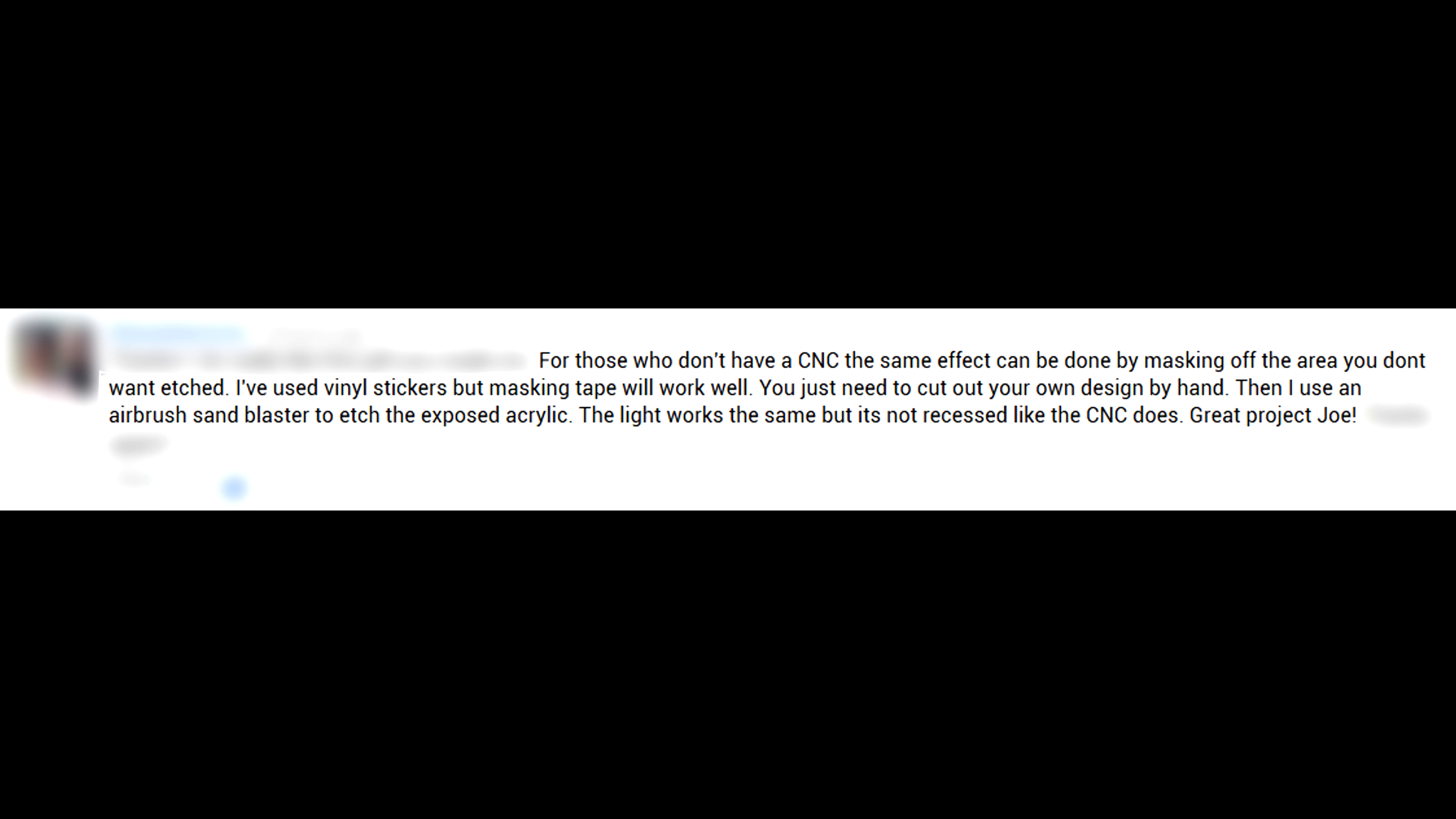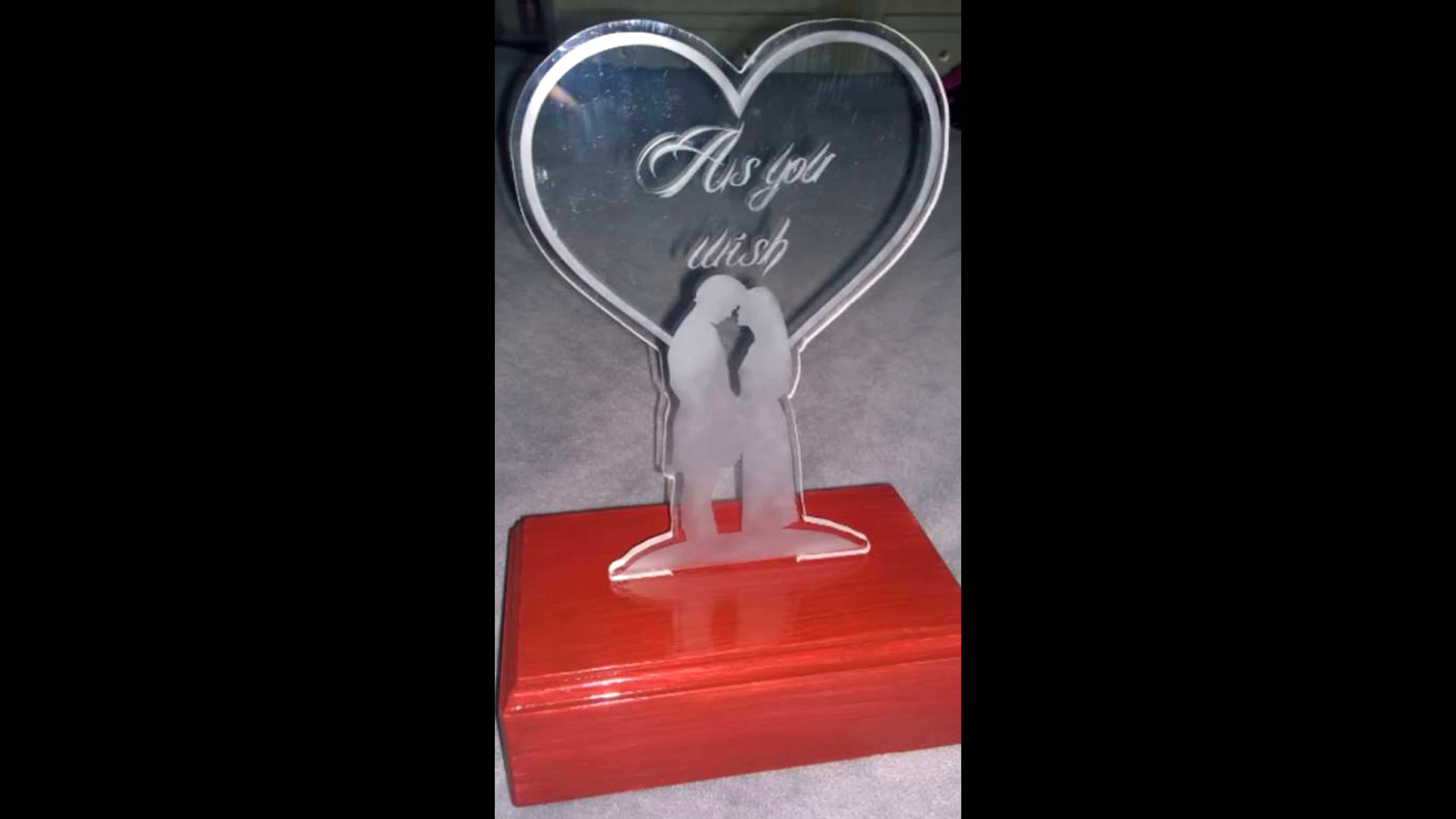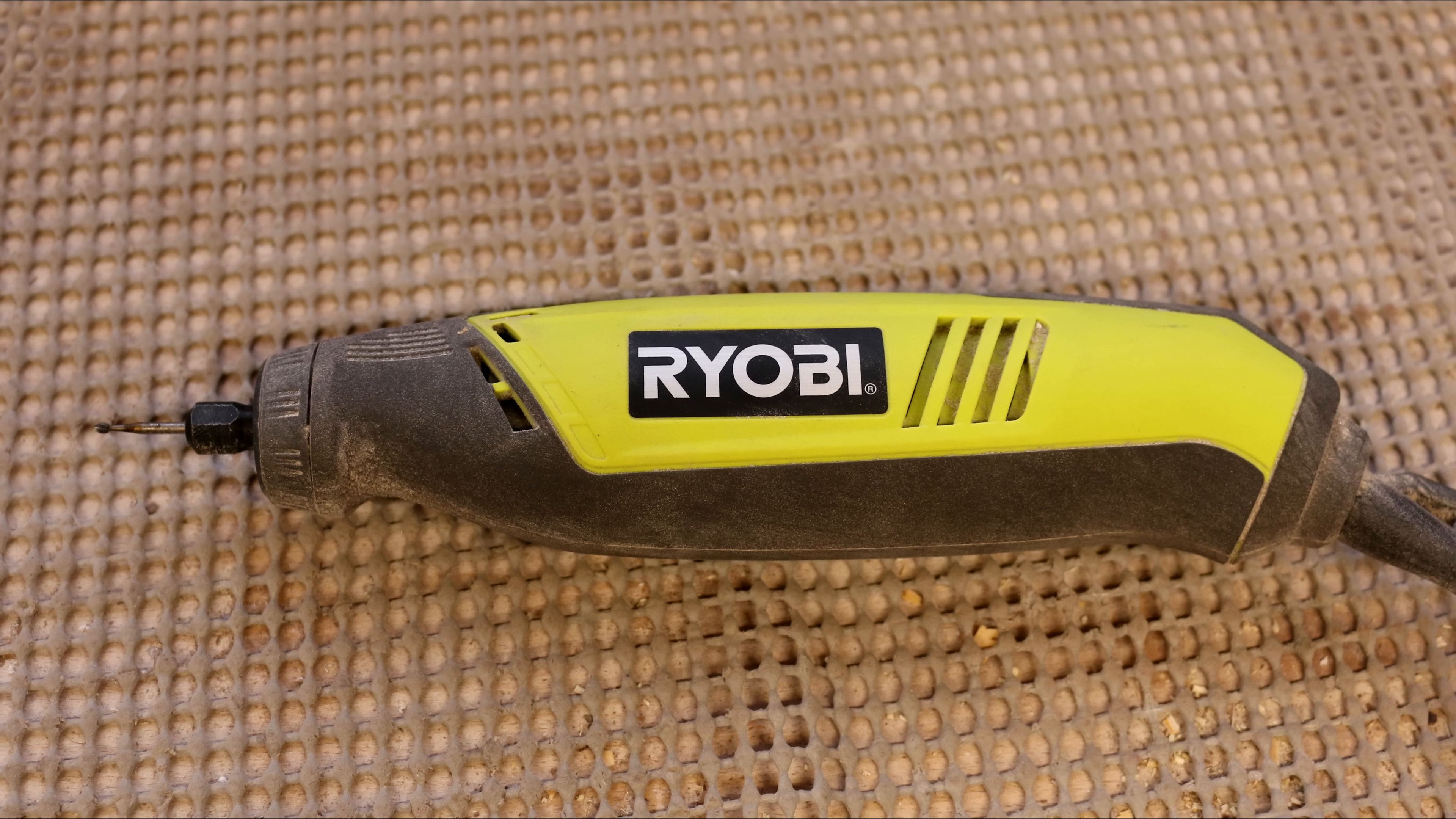First of all I had a great comment from Shane. He has made very similar signs before. His method is to mask off the area you don't want to be etched and then use an airbrush sandblaster to etch the exposed acrylic. In this example he actually used a vinyl sticker to mask off the area, which I think is a brilliant idea.